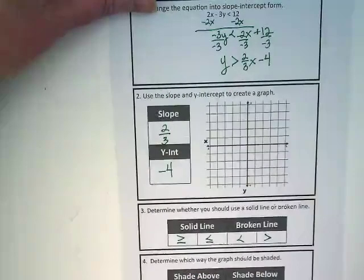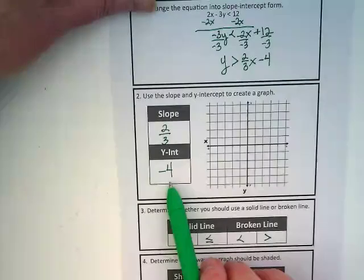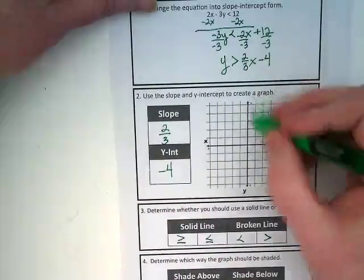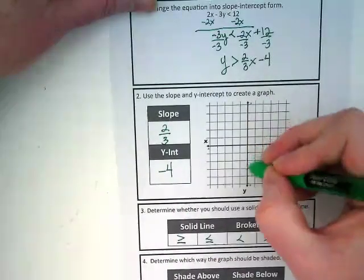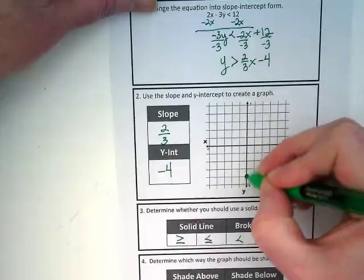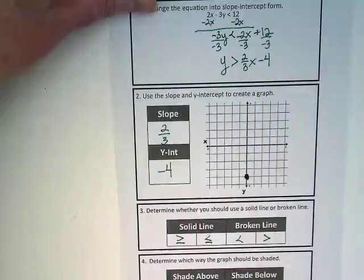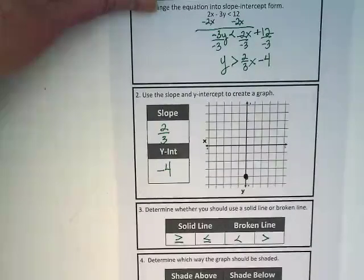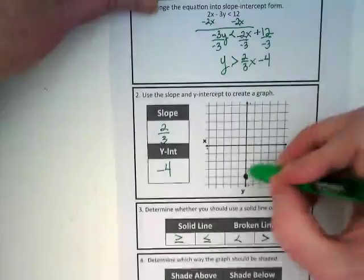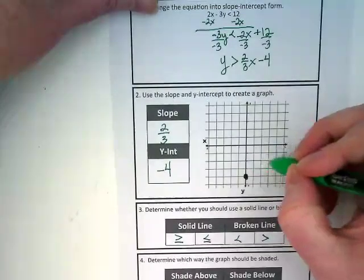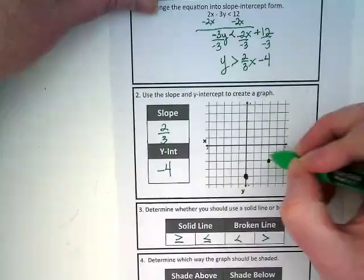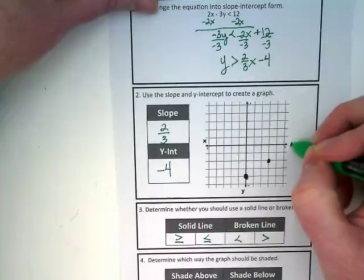So just like when we're graphing equations, with an inequality, we start with our plus b, which in this case our plus b is a minus 4. So down on the y-axis, we're going to put a point at negative 4. We're going to make 2 more points using our slope. We're going to rise up how much? 2. And run across 3. And I'd like to do that one more time, but it's going to be slightly off the graph. It'll end up right here.